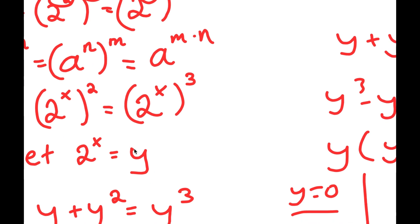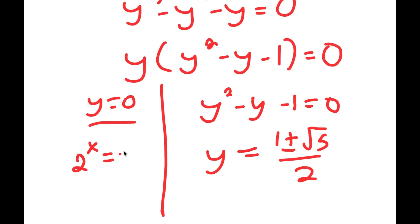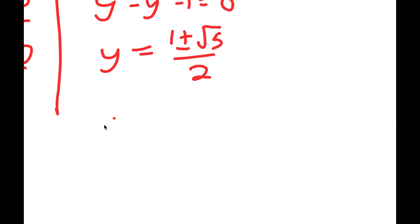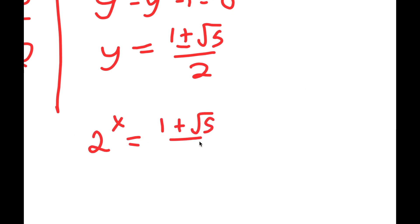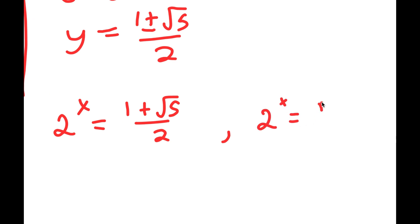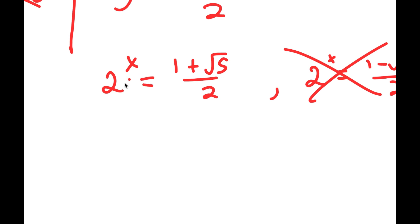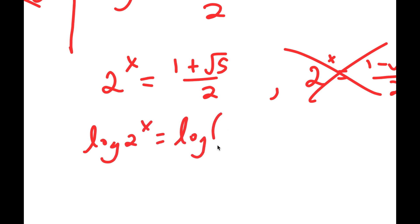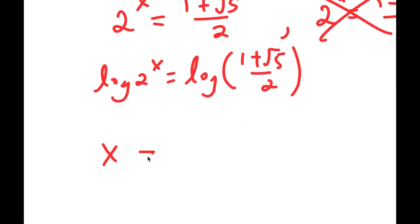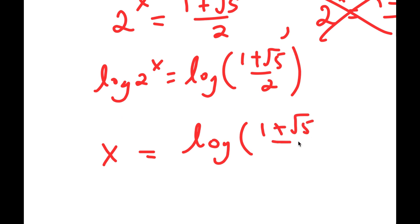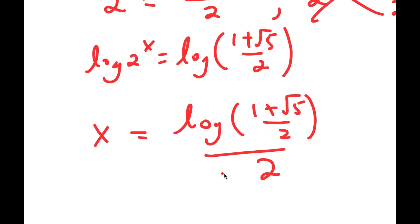Now remember we let 2 to the power of x equal y. First, 2 to the power of x equals 0 has no solution, since an exponential can't equal 0. For y equals 1 minus the square root of 5 over 2: since 1 minus the square root of 5 is negative, this is a negative number, and a positive base exponential can't be negative — so no solution there either. The only valid solution is 2 to the power of x equals 1 plus the square root of 5 over 2. Taking the log of both sides, x equals log of 1 plus the square root of 5 over 2, divided by log 2.